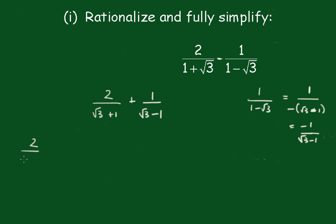So that's 2 over root 3 plus 1 times root 3 minus 1 over root 3 minus 1 plus 1 over root 3 minus 1 times root 3 plus 1 over root 3 plus 1. Just make sure these signs change.